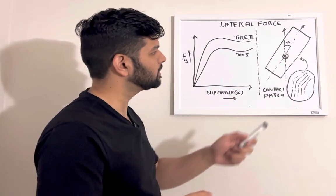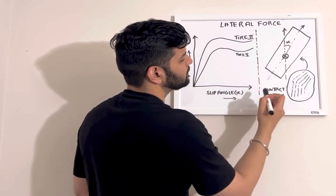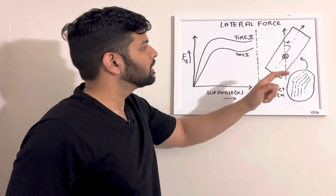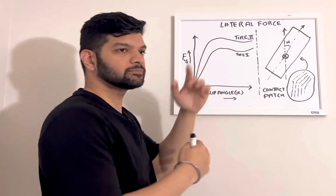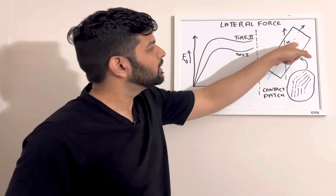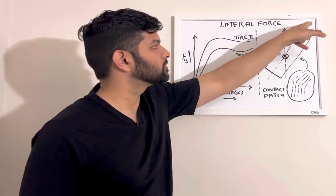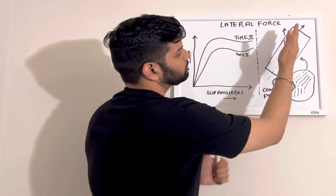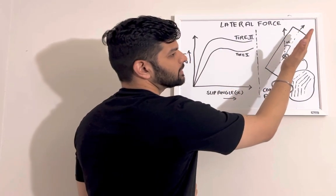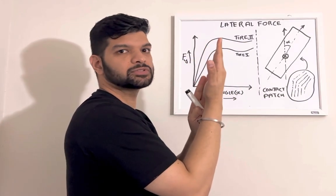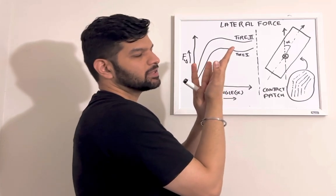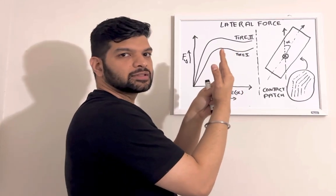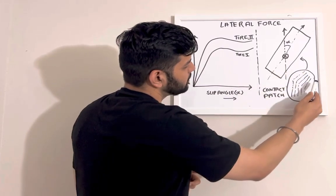So this is a tire trying to turn in this direction. This arrow defines direction of heading and this arrow defines direction of travel. Essentially, whenever our tire moves like this, the entirety of the tire is in this direction, but the contact patch which is in contact with the road will have a tendency to stay in place because of the interaction between the road and rubber molecules. So the contact patch will somehow look like this.